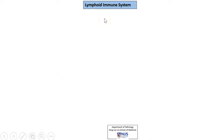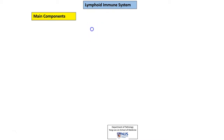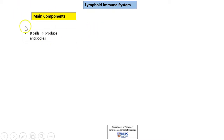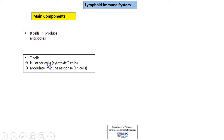We are going to take a very broad overview, a big picture view of the lymphoid immune system. So let's start off by looking at what are the main components. Of course we will have the B cells or B lymphocytes. These are responsible for producing antibodies as part of the humoral immune response.